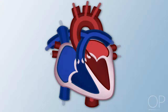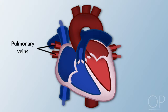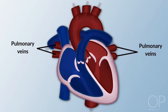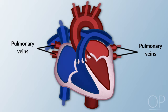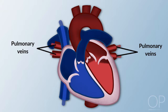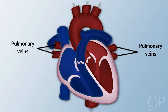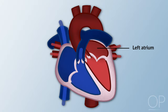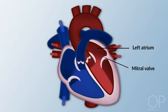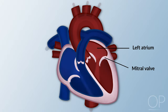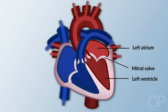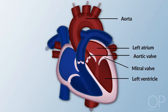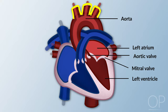The pulmonary veins — two from the right lung and two from the left lung — carry oxygenated blood from the lungs to the left side of the heart. The oxygenated blood flows from the left atrium through the mitral valve and into the left ventricle, and out through the aortic valve and into the aorta and to the body.